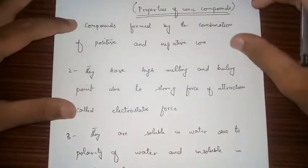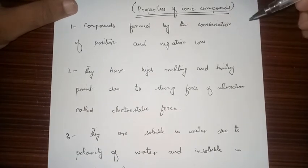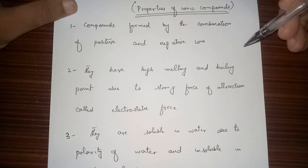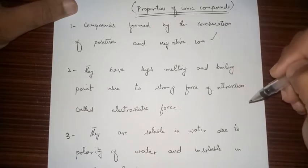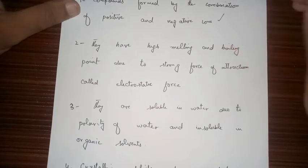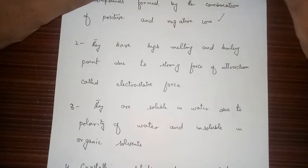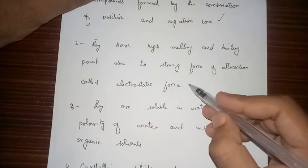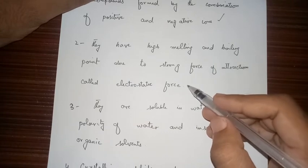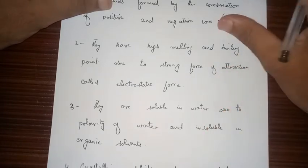Now let's look at the properties of ionic compounds. Ionic compounds are formed by the combination of positive and negative ions, for example sodium ion and chloride ion. They have high melting and boiling points due to the strong electrostatic force of attraction between the ions, which holds them strongly to each other.